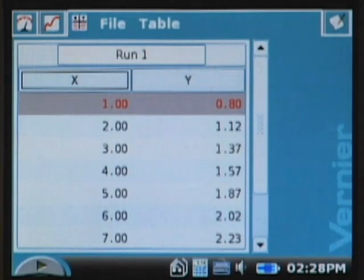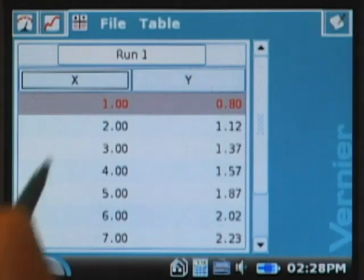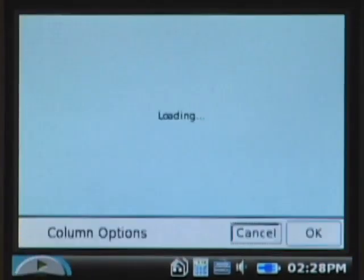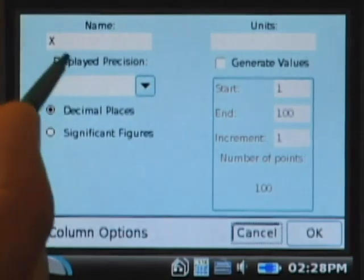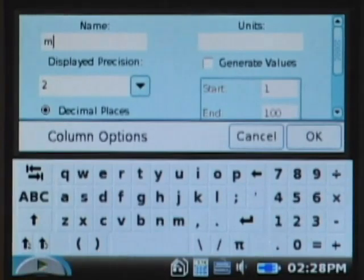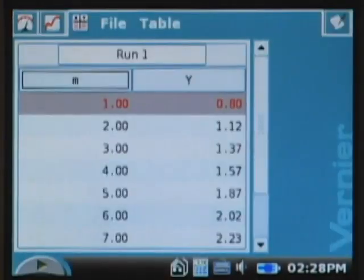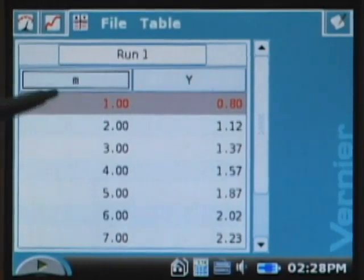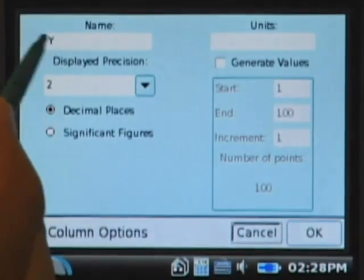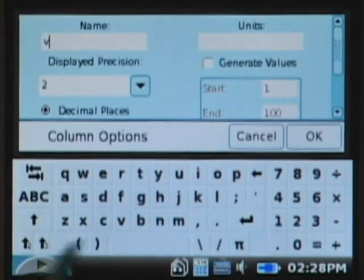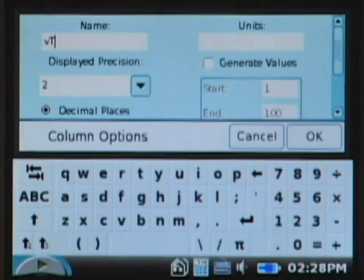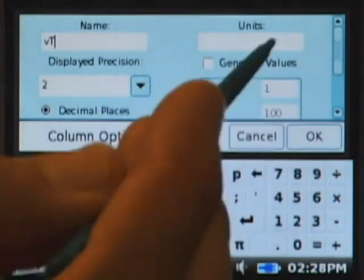Let me show you how you can use the features of the LabQuest app, first to label the columns a bit better than X and Y. This first column is simply the number of coffee filters, or it's proportional to the mass of the stack. If I tap on the X, that calls up a dialog where I can control the settings for that column. The name of the column is X, but I can select that and just change it to M. And I can tap OK, and now my column is named M. If I tap on that Y, I can rename that as VT, meaning terminal velocity. And I could enter units. I'm going to keep going.